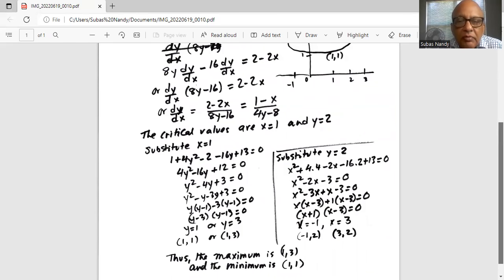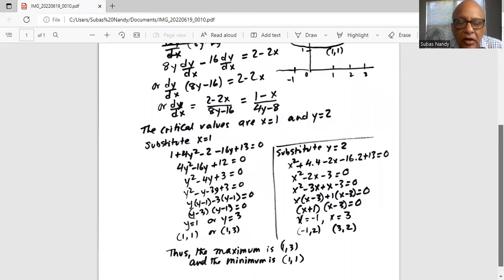When we substitute y = 2, we solve for x. The equation is (x + 1)(x - 3) = 0, and the equation is x² - 2x - 3, whose two solutions are x = -1 and x = 3. And if you plug it back, we get the two points (-1, 2) and (3, 2).